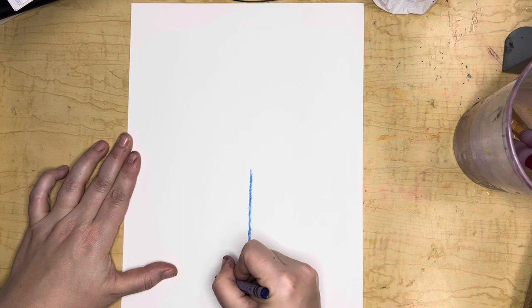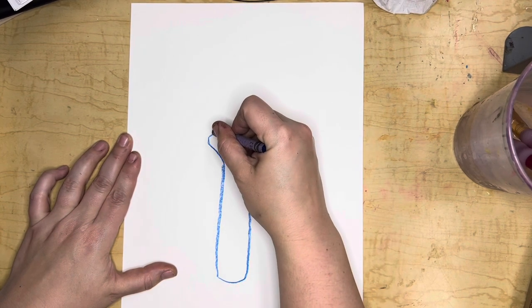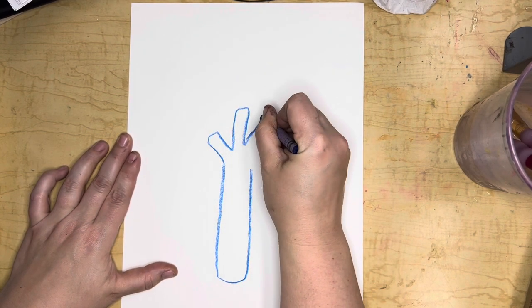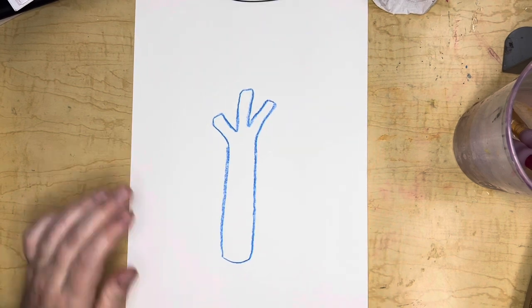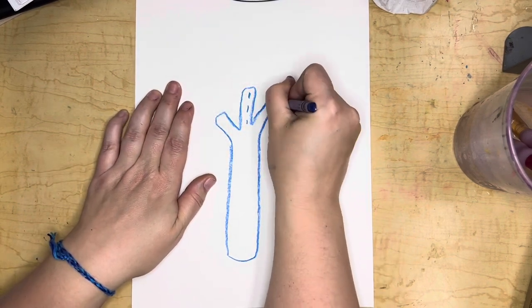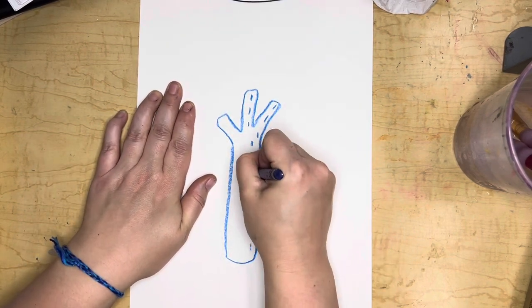To begin, you only have to draw a tree trunk shape. I did three little branches on the top. It's kind of like a long rectangle, but you can do more if you want.